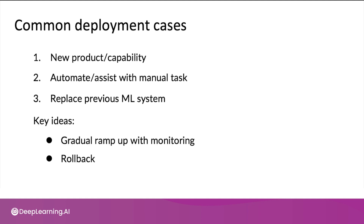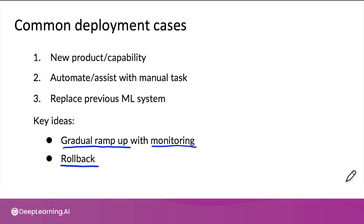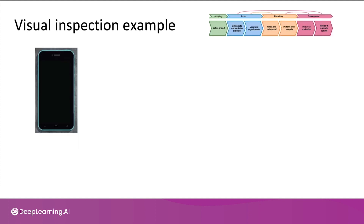In these cases, two recurring themes you see are: first, you often want a gradual ramp-up with monitoring — rather than sending tons of traffic to a maybe not fully proven learning algorithm, you send only a small amount and monitor it, then ramp up. Second is rollback — if the algorithm isn't working, it's nice if you can revert back to the previous system.